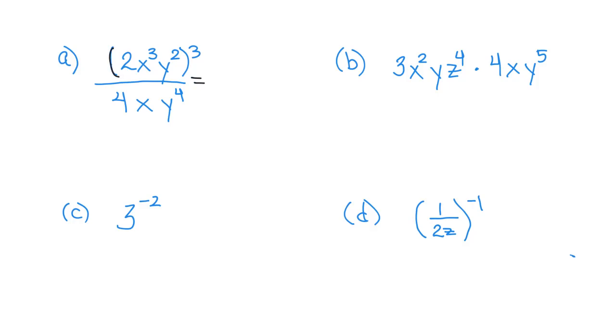I noticed that this whole quantity is to the third power. That means every part has to be raised to the third power. So 2 to the third power is 8. x to the third to the third power, when it's power to power like this, the base stays the same and we multiply 3 times 3, which is 9.